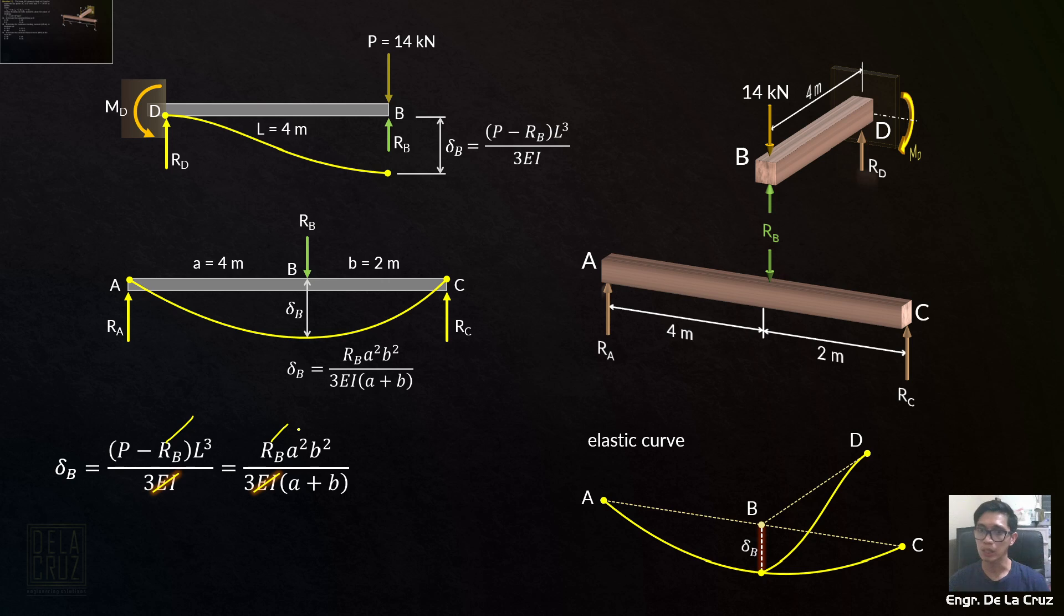The unknown here is only Rb. Rb is unknown. L for this, by the way, is for this cantilever beam. So L is 4 meters to the power of 3. Rb unknown. A is 4, B is 2 over 3 EI. EI is canceled. A is 4, B is 2. We can solve for Rb, 12 kN.